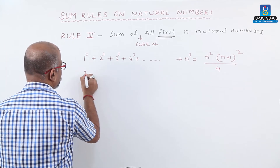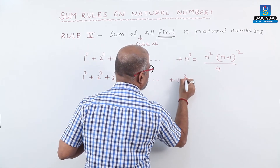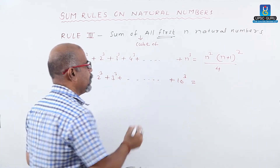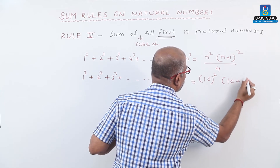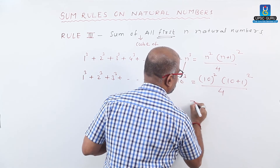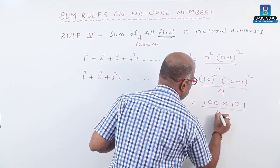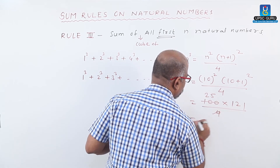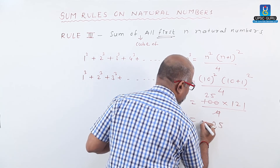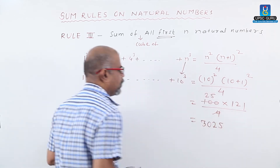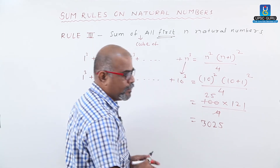Suppose they ask: find 1 cubed plus 2 cubed plus 3 cubed up to 10 cubed. Here n equals 10. Substituting: 10 squared into 10 plus 1 whole squared, divided by 4. That is 100 into 11 squared, divided by 4. 11 squared is 121. So we get 100 into 121 divided by 4, which equals 3025. Therefore, 1 cubed plus 2 cubed plus 3 cubed up to 10 cubed equals 3025.